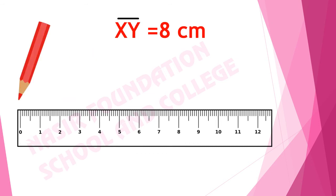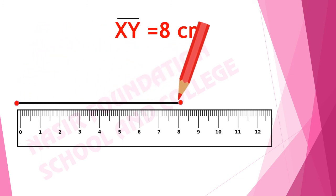Now we have to draw line segment XY of eight centimeter. To draw a line segment, we place the scale and mark a starting point at zero centimeter. We will mark another point at eight centimeter, and then we will join it with the help of a pencil. Now we have drawn the line segment of eight centimeter. We will mark the starting point as X and ending point as Y. Now we have drawn line segment XY of eight centimeter.